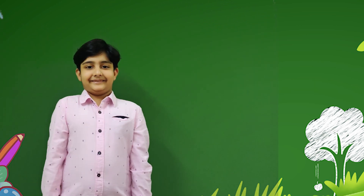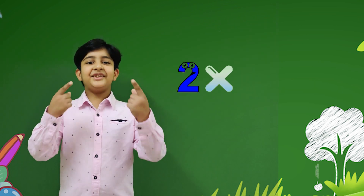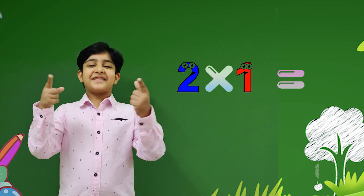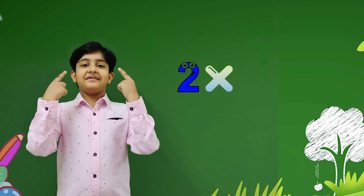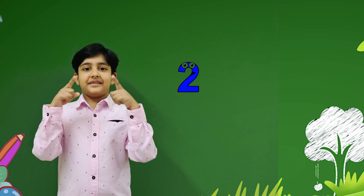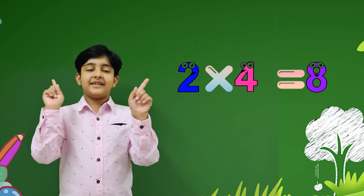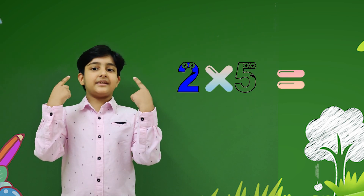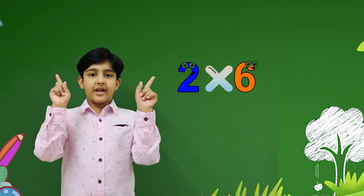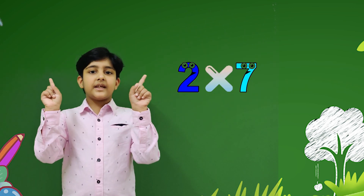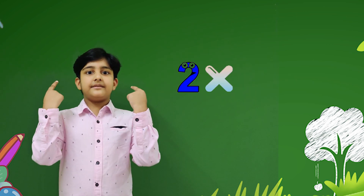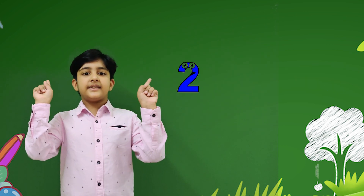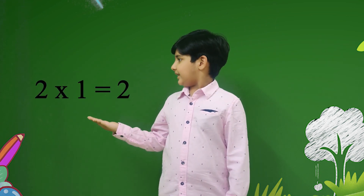Let's sing again! 2 ones are 2, 2 twos are 4, 2 threes are 6, 2 fours are 8, 2 fives are 10, 2 sixes are 12, 2 sevens are 14, 2 eights are 16, 2 nines are 18, 2 tens are 20.